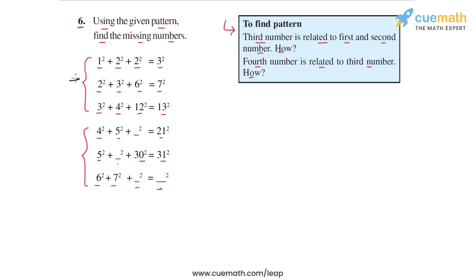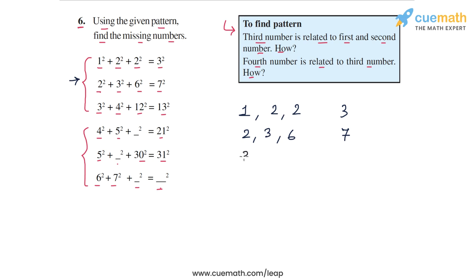Let's take the first three statements and write out the four numbers in each. From the first statement, we have 1, 2, 2 on the LHS and 3 on the RHS. In the second statement, we have 2, 3, and 6 on the LHS and 7 on the RHS. In the third statement, we have 3, 4, and 12 on the LHS and 13 on the RHS.